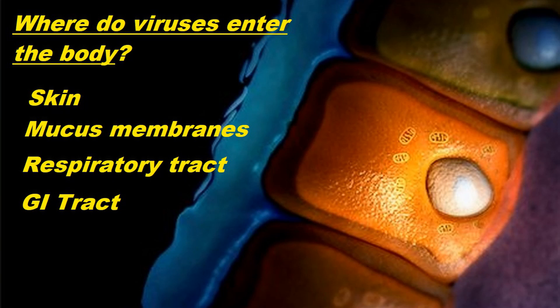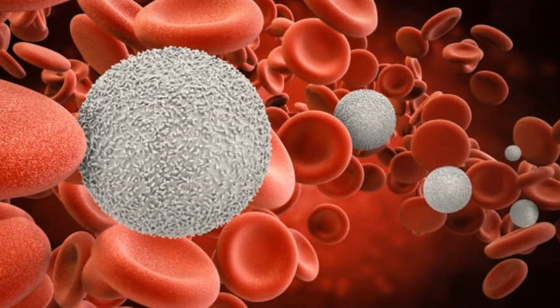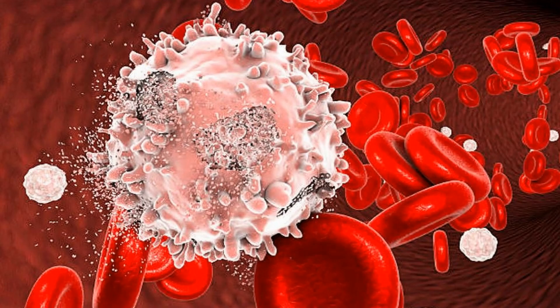If a virus manages to make it through these physical barriers, it encounters a second line of defense, and this is engaged against anything the body recognizes as foreign. White blood cells engulf, ingest and eliminate foreign particles including viruses before they can infect any of the body's cells. The white blood cells constantly circulate throughout the body in the blood and the lymph system, and the most important of these white blood cells seem to be the macrophages.